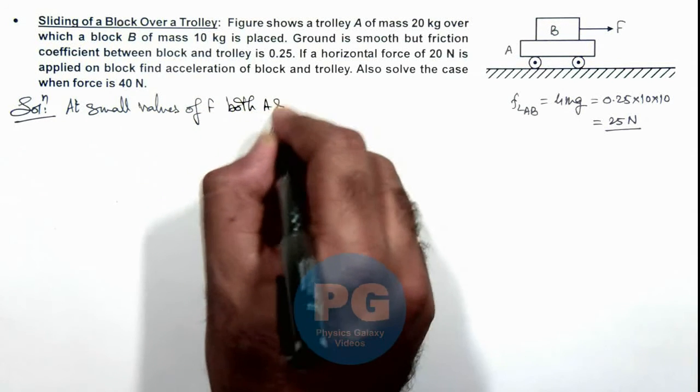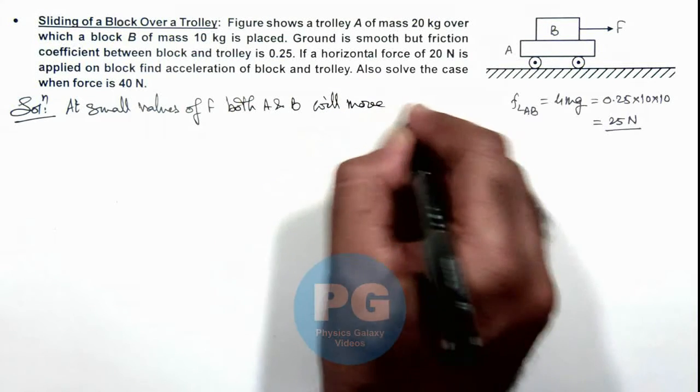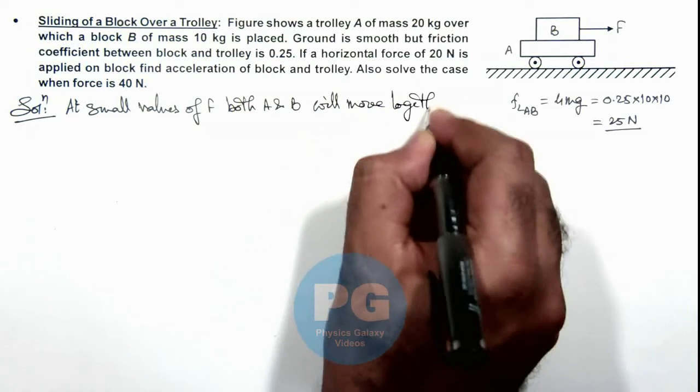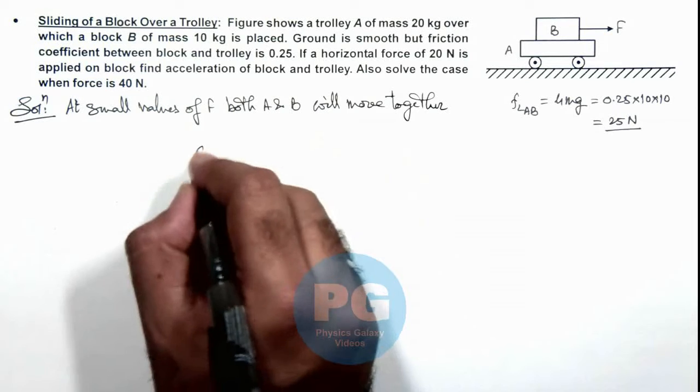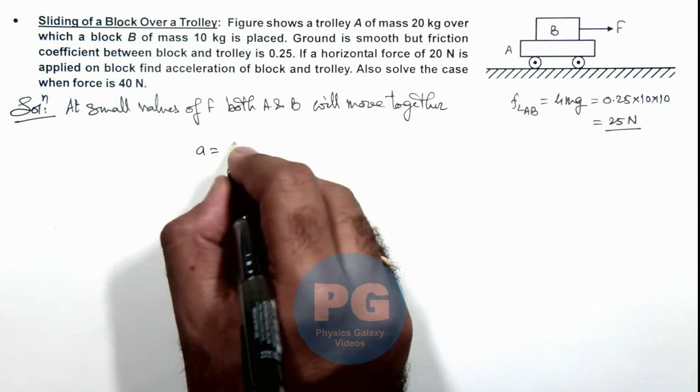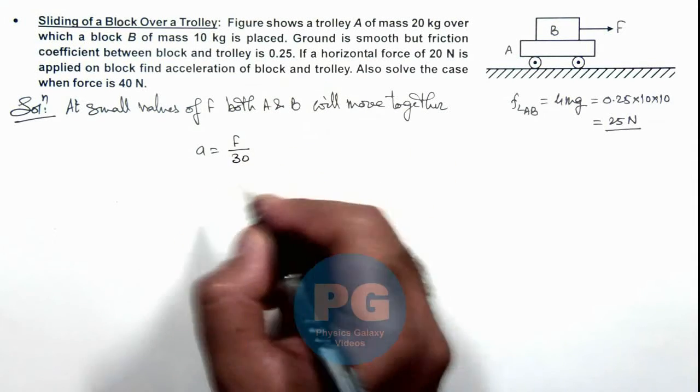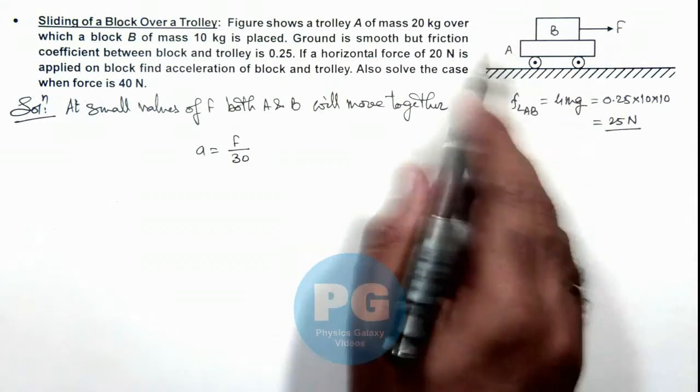Both A and B will move together, and for which we can write the acceleration of the system as F divided by the total mass which is 30 kilograms. So with this acceleration the whole system will move.